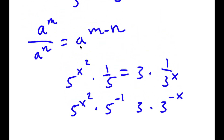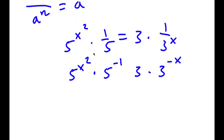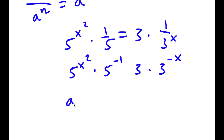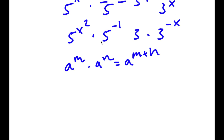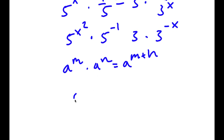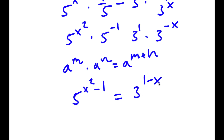Now I can also multiply these, and if a to the power of m times a to the power of n equals a to the power of m plus n. So 5 to the power of x squared times 5 to the power of negative 1 equals 5 to the power of x squared minus 1, which is equal to 3 to the power of 1 times 3 to the power of negative x, which equals 3 to the power of 1 minus x.